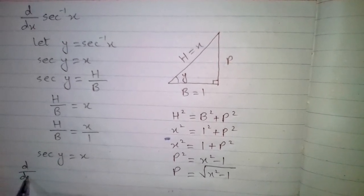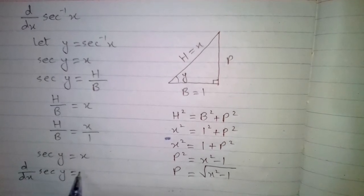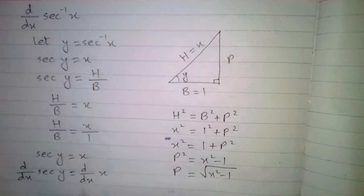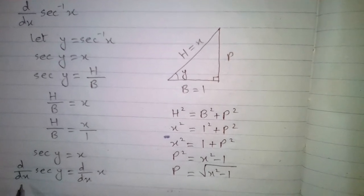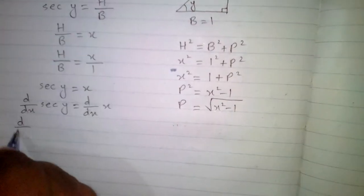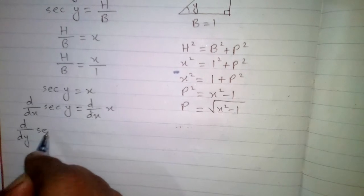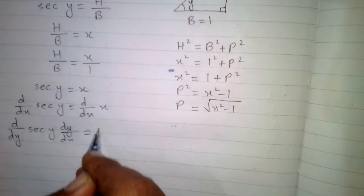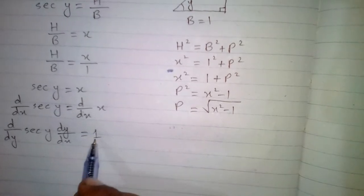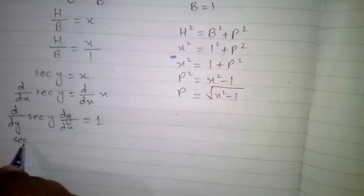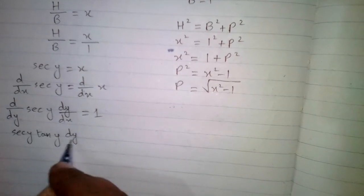Now we will take the derivative of sec y equals x. Differentiating both sides with respect to x, we have d by dx of sec y equals d by dx of x. We cannot differentiate sec y with respect to x directly, so we apply the chain rule: d by dy of sec y multiplied by dy by dx equals 1. The derivative of sec y is sec y tan y, so sec y tan y times dy by dx equals 1.